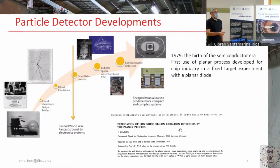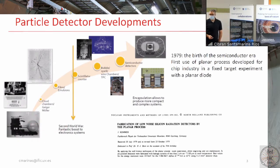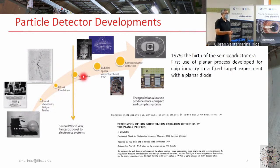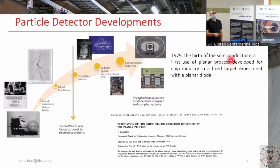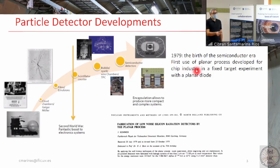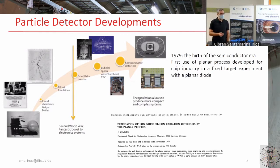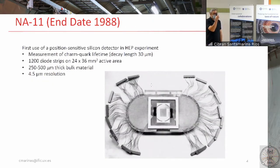This cartoon shows how experiments evolved — from tabletop setups, through emulsions and films, up to large gaseous detectors, until 1979, which is considered the birth of the semiconductor era. I point you to the original paper by Joseph Kemmer, who showed how to build a planar diode using semiconductor industry developments. That was the origin of the semiconductor detector era.